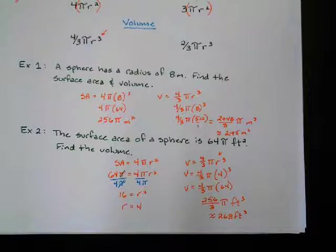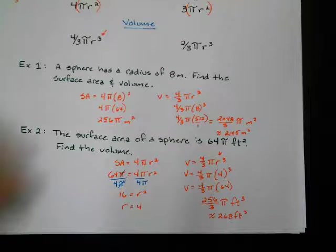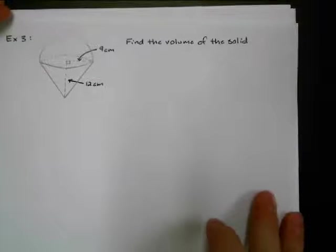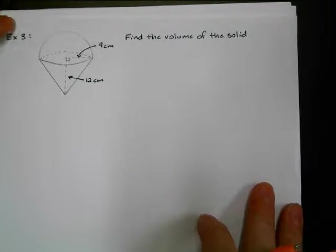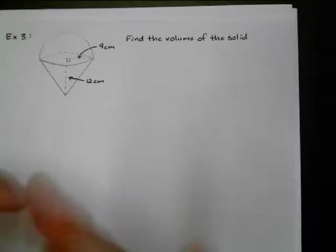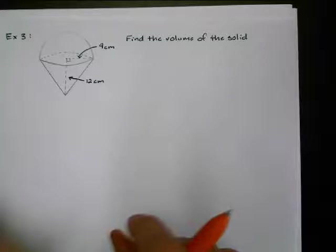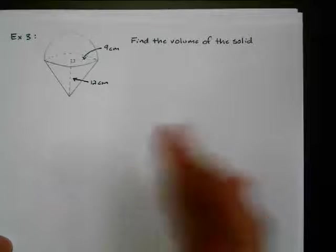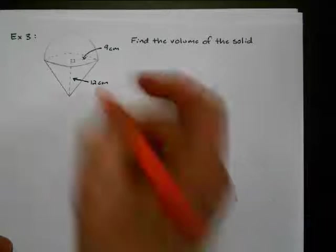Alright, those are the basic ones. Let's do this next one. So I've got, I don't know, what's that look like? It looks like one of those, the ice, the shaved ice. It's like a little shaved ice thingy. So anyways, I've got two different shapes in the solid. Looks like I've got a hemisphere, and I've got a cone.